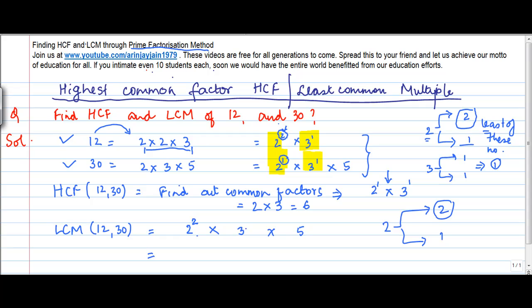For 3, both have power 1, so we use 1. For 5, the maximum is 1. When you solve this, you get 4 × 3 × 5, which equals 60. So the LCM of these two numbers is 60.